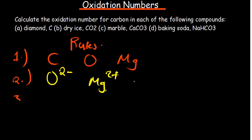Number three: the oxidation number of group one elements is always plus one, provided they are in a compound. Group two metals have a charge of plus two in any compound. Don't mix up rule one, which deals with elements existing without any charge, with rules two and three, which deal with ions and elements in compounds respectively.